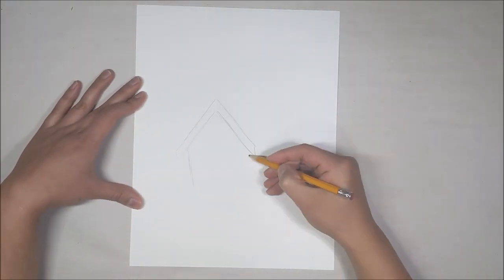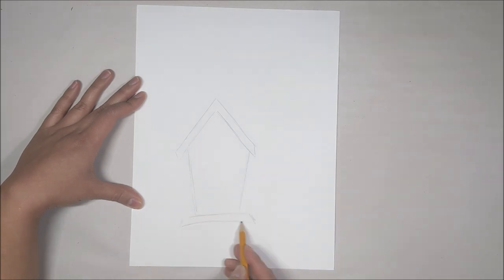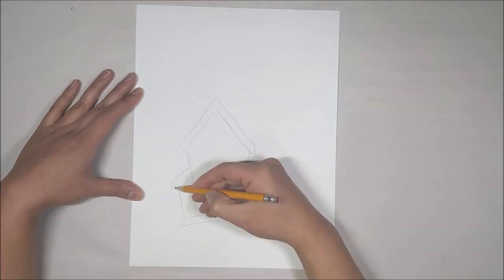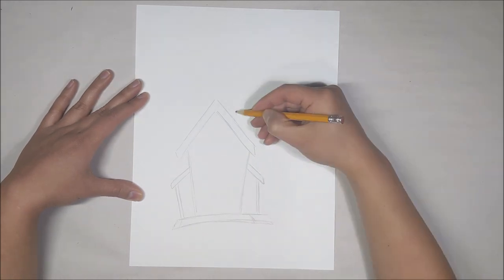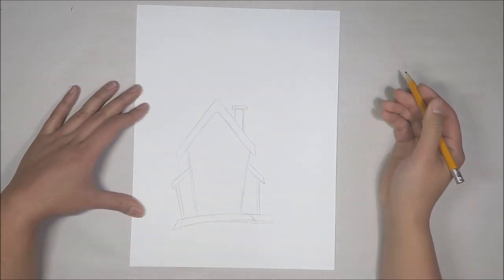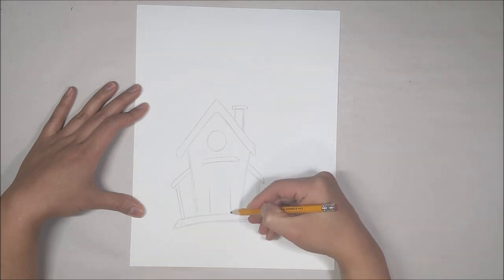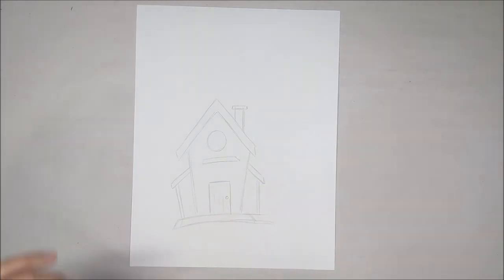I start with the rooftop with the two sides and a platform at the bottom. Then I am adding my two porches and now adding in a small chimney and then a little hole for the bird to come in and then a door at the bottom to complete the house.